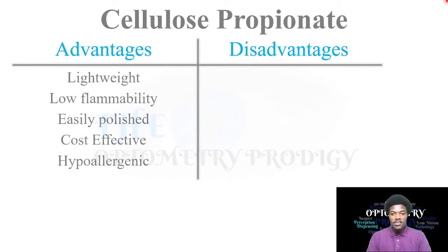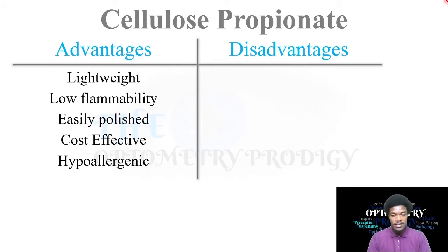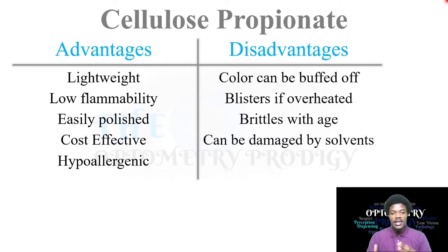Cellulose propionate has similar advantages to cellulose acetate: lightweight, low flammability, easily polished, cost effective, and hypoallergenic. The disadvantages are that the color can be buffed off, it blisters when overheated, brittles with age, and can be damaged by solvents and chemicals.